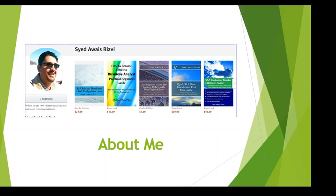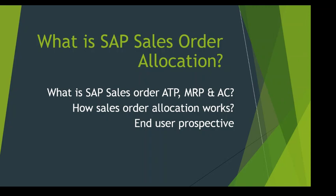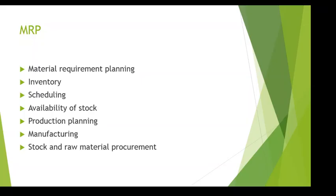Let's talk about what is SAP sales order allocation, or SAP order ATP. ATP stands for Available to Promise. MRP stands for Material Requirement Planning, and AC stands for Availability Check. Let's take a look at what MRP is.